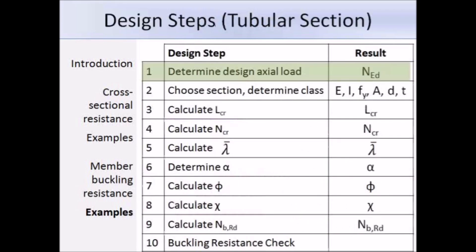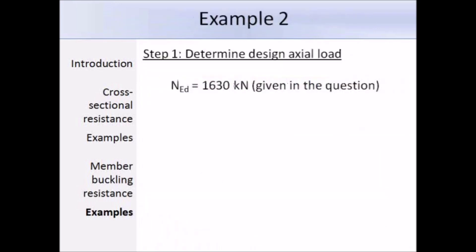The first step is to work out the design axial compression load. For this example it's straightforward, as it was given directly: the design axial load is 1630 kN.